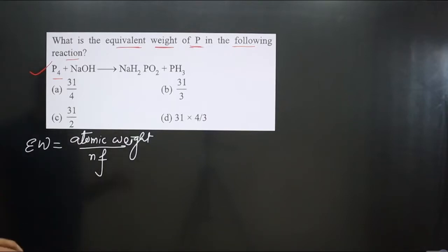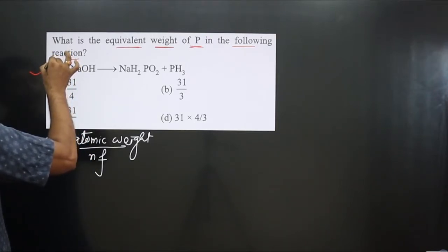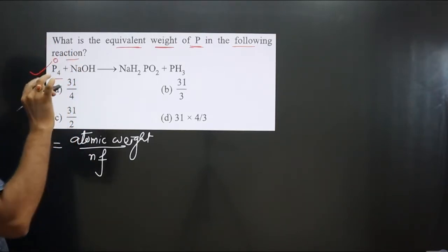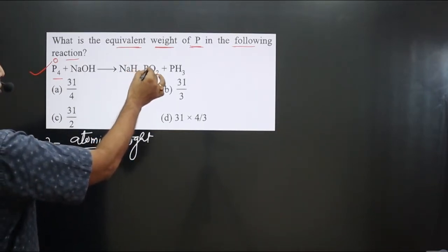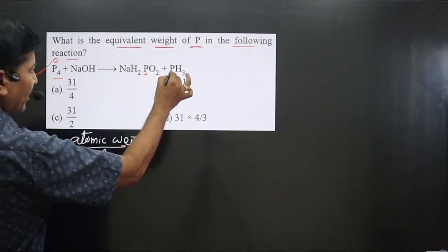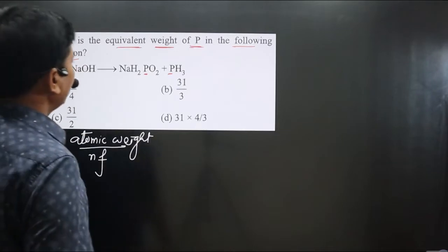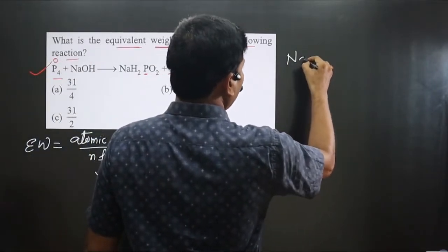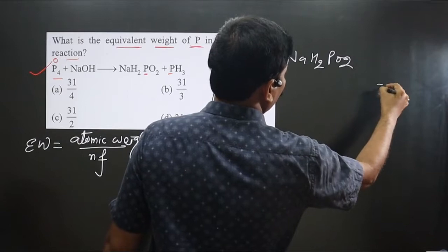We write down the oxidation number of phosphorus on both sides of the equation. P₄ is a neutral molecule made up of the same type of atoms, so it has zero oxidation number. On the other side, NaH₂PO₂ is present — phosphorus is the central element there as well.